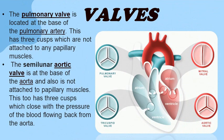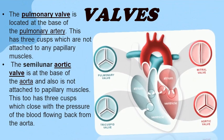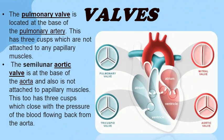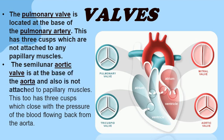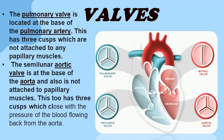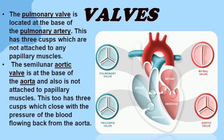The pulmonary valve is located at the base of the pulmonary artery and has three cusps, which are not attached to any papillary muscles. The semilunar aortic valve is at the base of the aorta and also is not attached to papillary muscles. It too has three cusps, which close with the pressure of blood flowing back from the aorta.